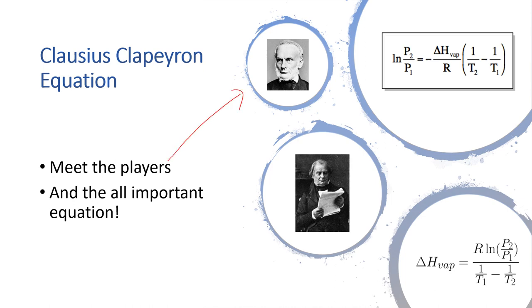Up here we have Clausius. He was a German fellow, and his colleague down here is Clapeyron, a French fellow. They worked together as mathematicians and physicists to develop the all-important equation that you see up here, better known as the Clausius-Clapeyron equation.